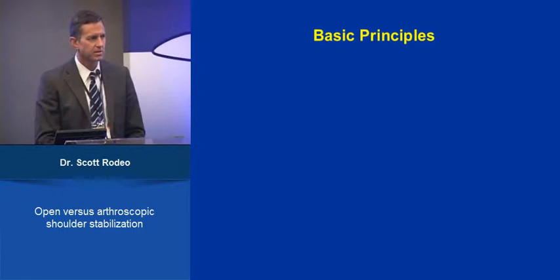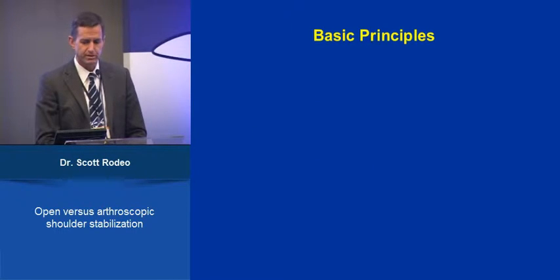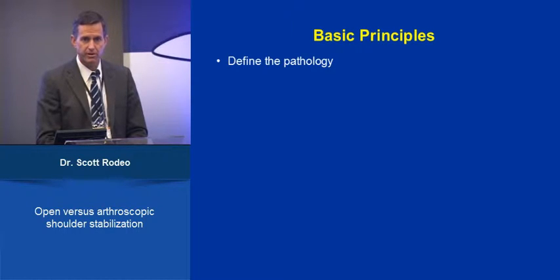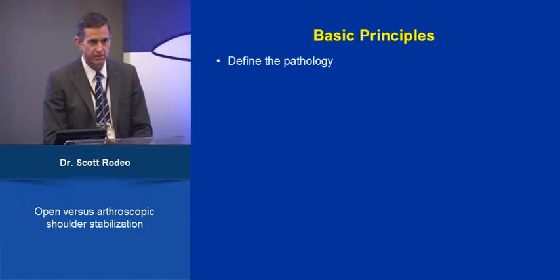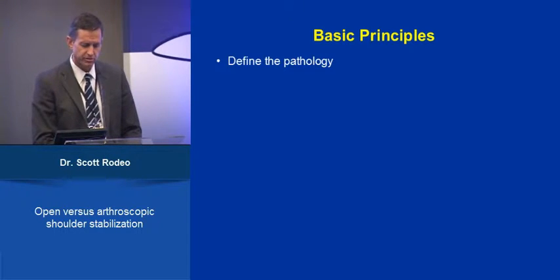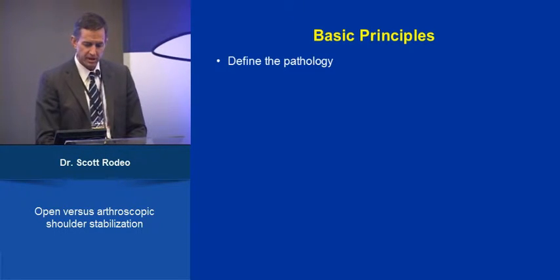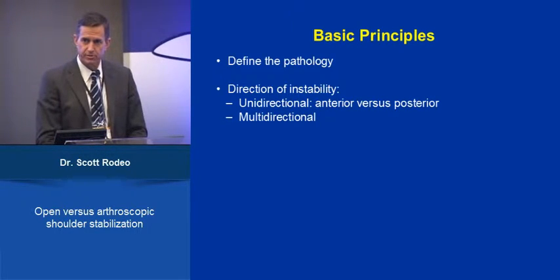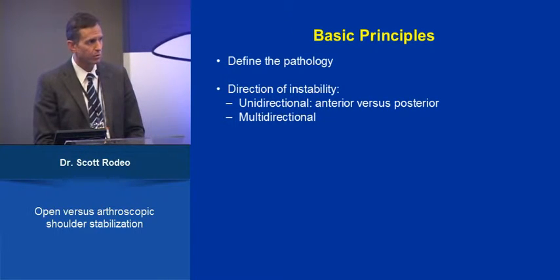In anything in surgery and medicine, start with considering basic principles. First, define the pathology. Dr. Uttori has gone through that very nicely already with bone issues, capsular issues, and labral issues. Define the direction of instability. Are we treating unidirectional — anterior or posterior — or in contrast, is this a multidirectional pattern?